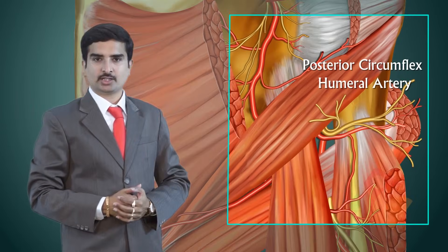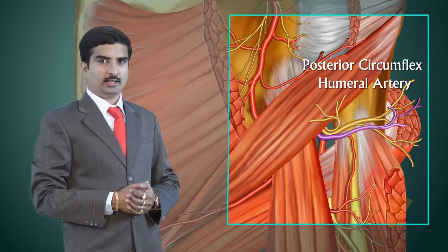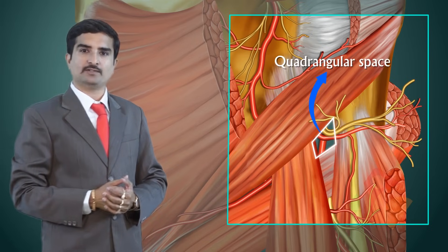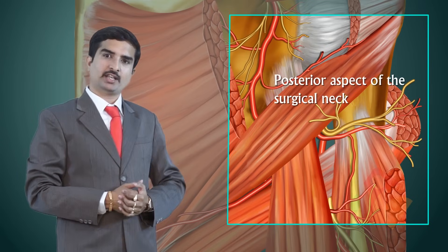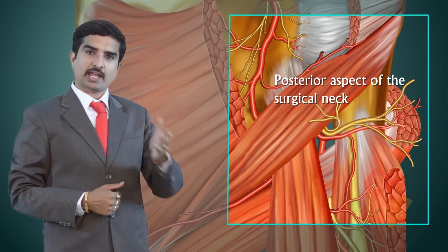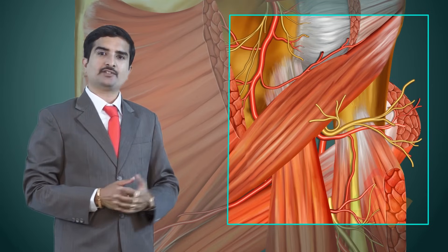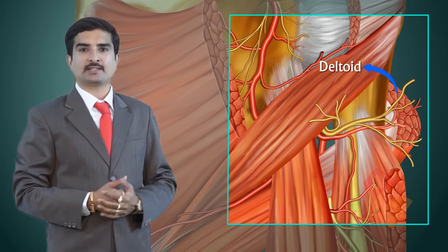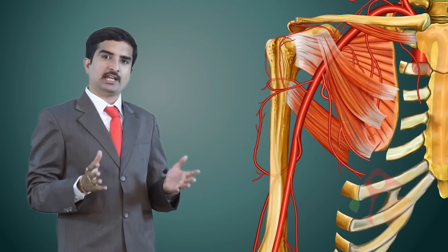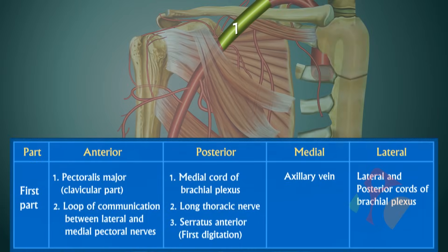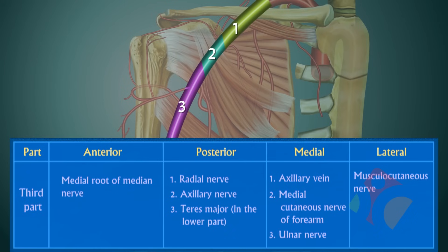The third branch of the third part is the posterior circumflex humeral artery. It passes along with the axillary nerve through the quadrangular space to reach the posterior aspect of the surgical neck, where it winds around the surgical neck and anastomoses with the anterior circumflex humeral artery. It also gives off a branch to supply the deltoid as well as the shoulder joint. This completes our detailed discussion of the axillary artery, its course, and all branches of its first, second, and third parts.